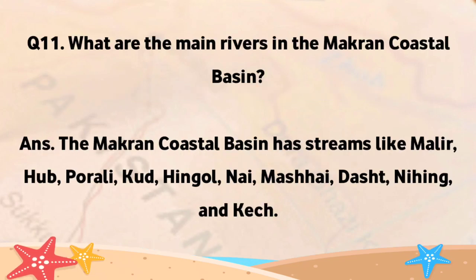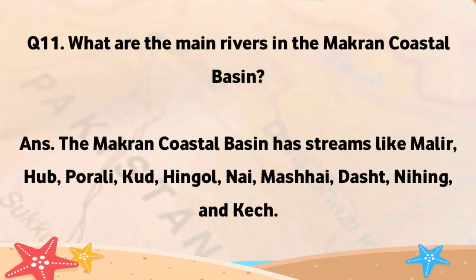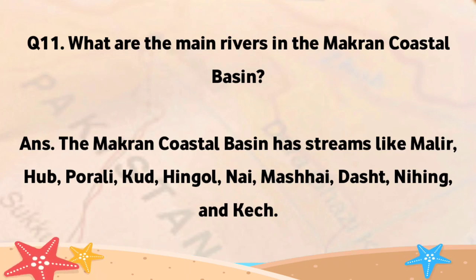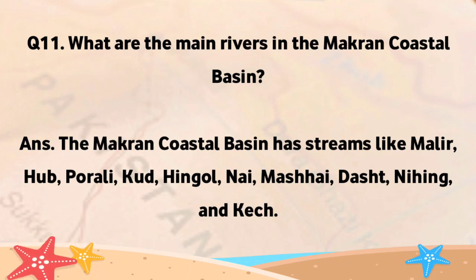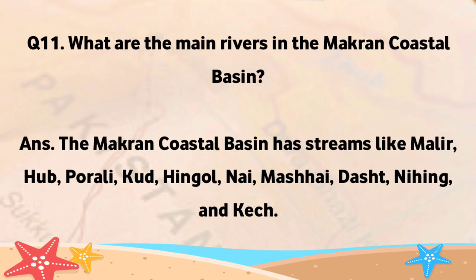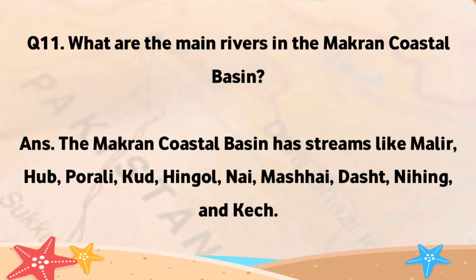What are the main rivers in the Makron Coastal Basin? The Makron Coastal Basin has streams like Malir, Hub, Porali, Kood, Hingal, Nye, Mashhai, Dasht, Nyeing, and Ketch.